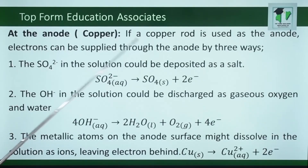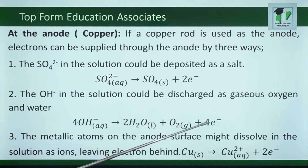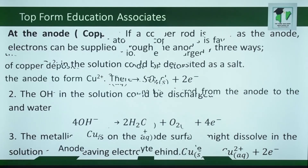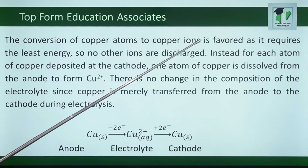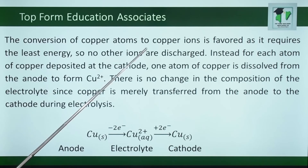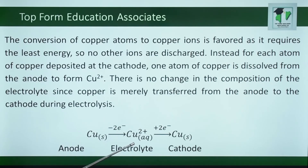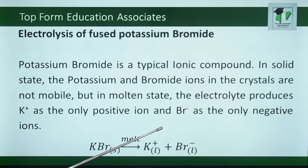If a copper anode is used, electrons can be supplied through the anode in three ways: the sulfate ion could be deposited as a sulfate salt, the hydroxyl ion could be discharged as gaseous oxygen and water, or the metallic atoms on the anode's surface might dissolve in the solution as ions, leaving electrons behind. The conversion of copper atoms to copper ions is favored as it requires the least energy, so no other ions are discharged. For each atom of copper deposited at the cathode, one atom of copper is dissolved from the anode to form copper-2 ion. There is no change in the composition of the electrolyte since copper is merely transferred from the anode to the cathode. The electrolyte will remain blue in color.